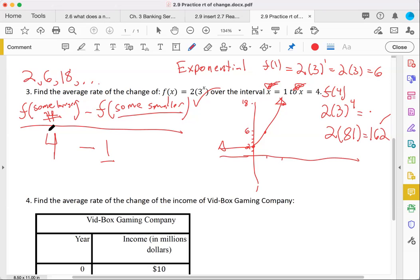So if we plug in 162, some larger number, f of some larger number, and then deduct some smaller number, that's 6, take 4 minus 1 in the denominator. This is 156, and we're dividing by 3, which is eventually going to be a rate of change of 52.